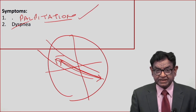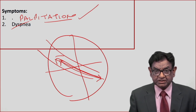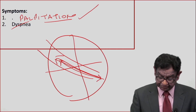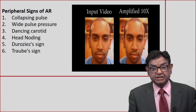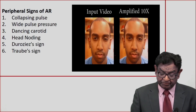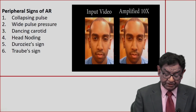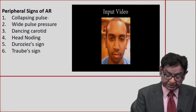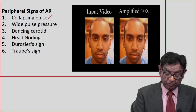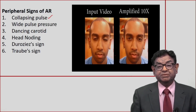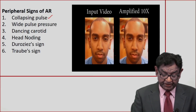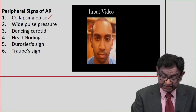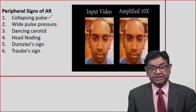Dyspnea occurs at a later stage when the patient starts developing congestive heart failure. Now, peripheral signs are very important: collapsing pulse, wide pulse pressure, and head nodding — you can see head nodding here.